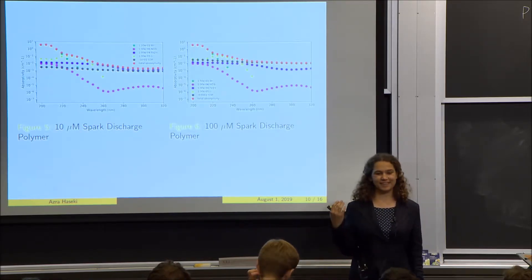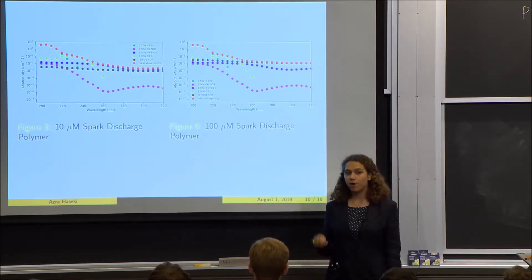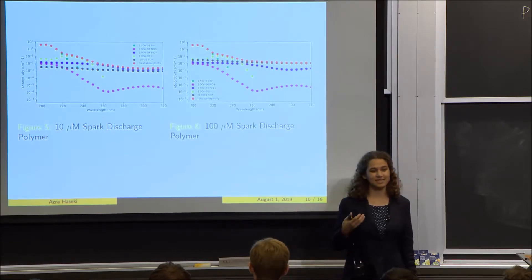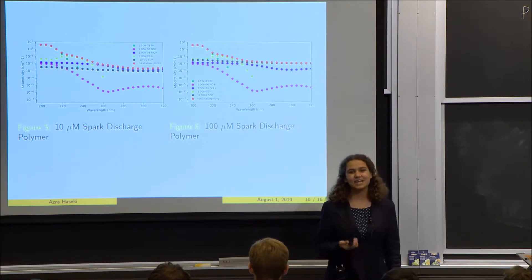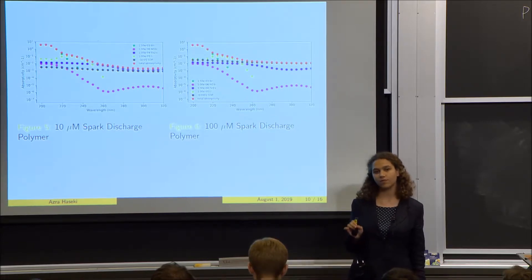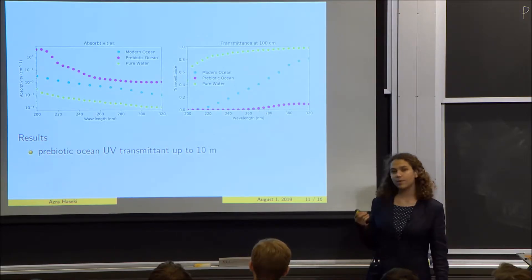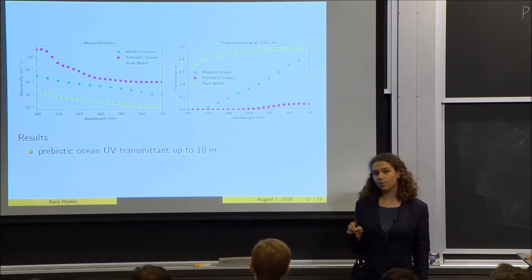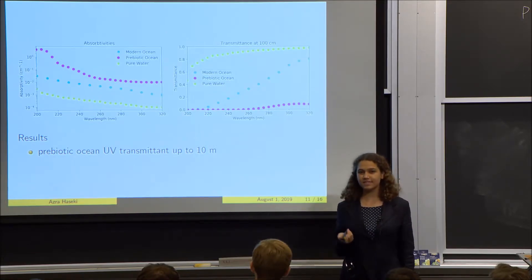Once we modeled the prebiotic ocean without organics, we had to account for the fact that there probably was some organic material present — we are after all investigating a pathway for life. We found that absorbance from those organic materials would become significant between 10 and 100 micromolar concentration. Overall, the prebiotic ocean was more absorbent than the modern ocean model, and UV was transmitted up to about 10 meters.